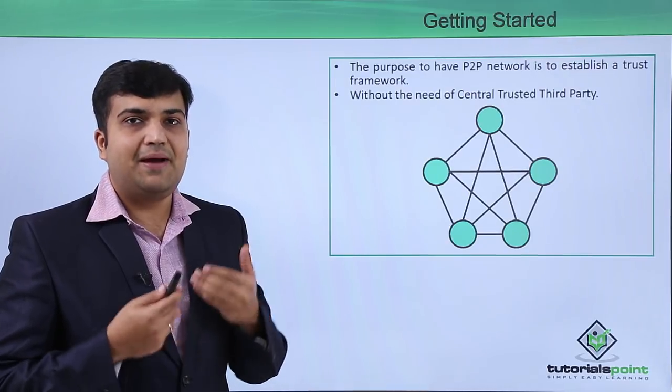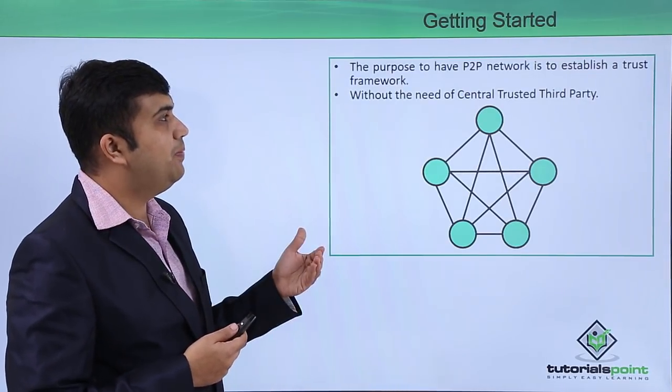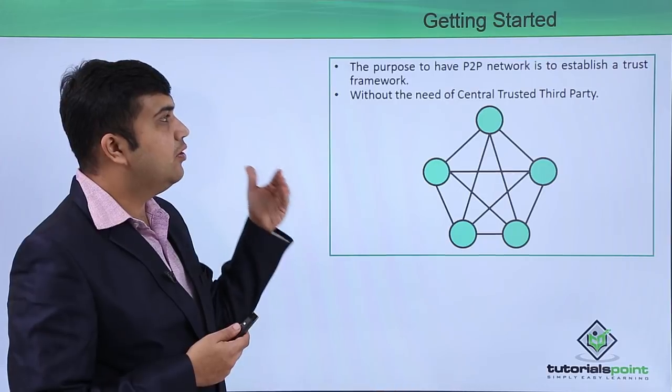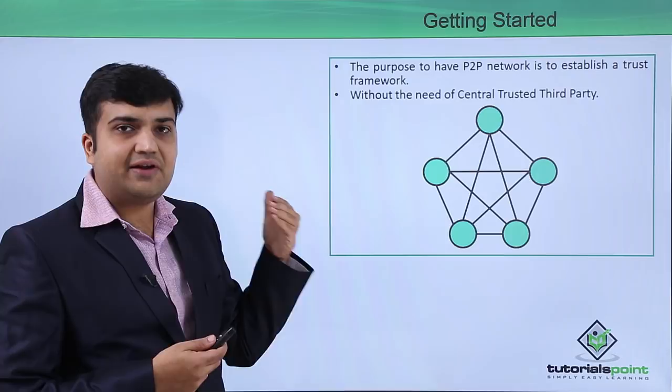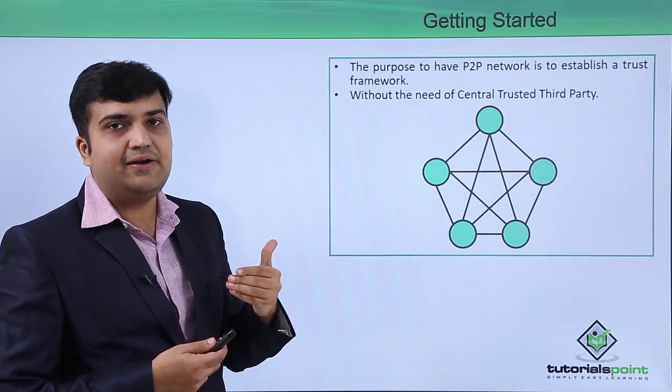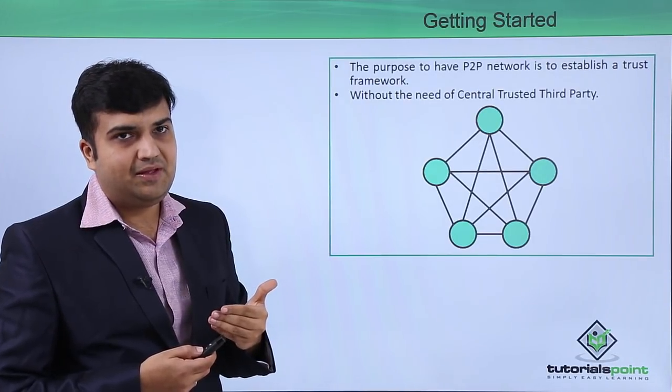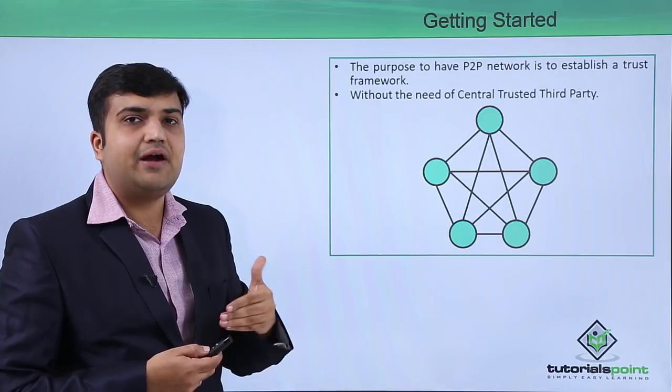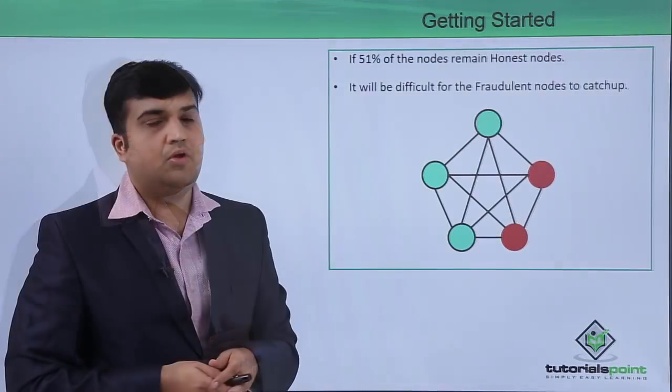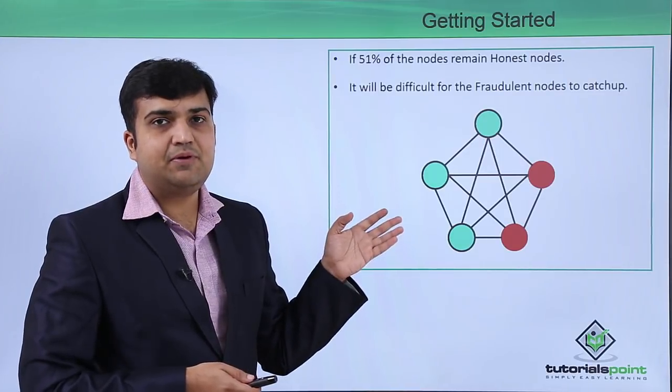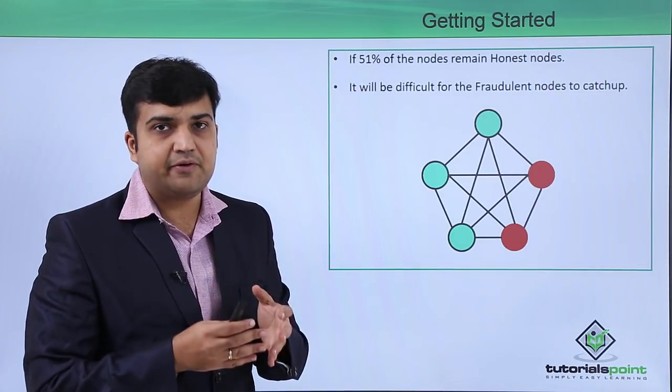Now blockchain has a new way of doing it by saying that this P2P network will help us remove the central trusted third party requirement and establish a transaction without the need of a trusted third party. We will see in the coming videos how this happens. This particular concept establishes a trust framework without the need of a trusted third party.